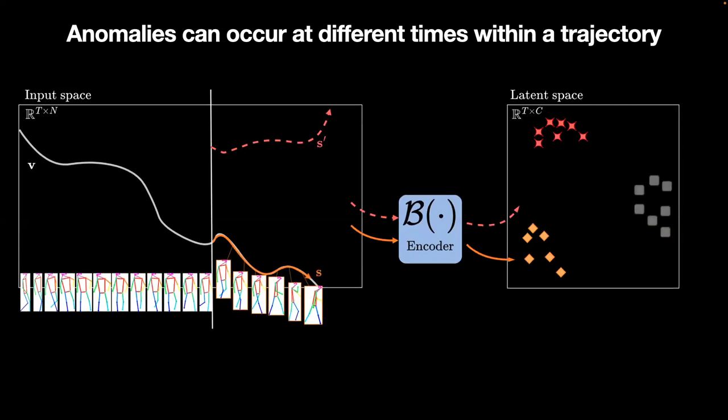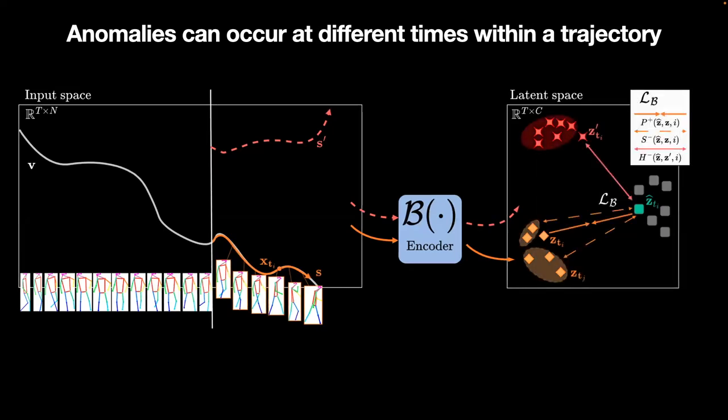We define a set of latent vectors that we learn through triplet loss. Each latent vector should be drawn near to corresponding encodings from the original trajectory segment and drawn further apart from encodings from different trajectories. We thus define positive pairs with the coordinates from the trajectory segment at the specific temporal location, and negative pairs otherwise.